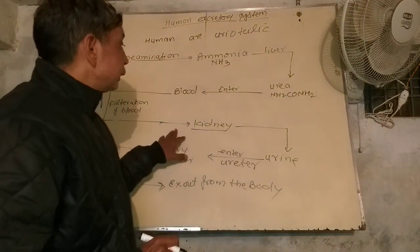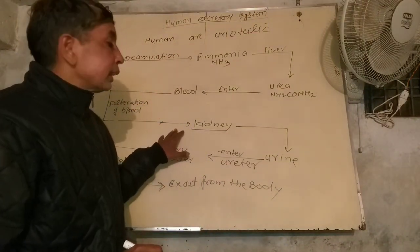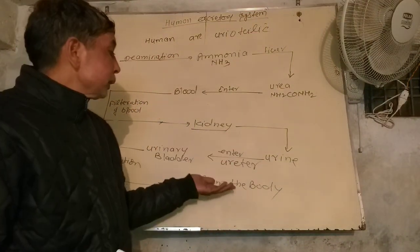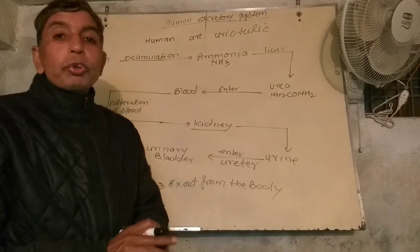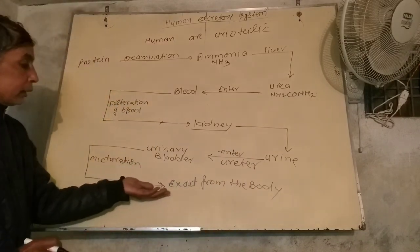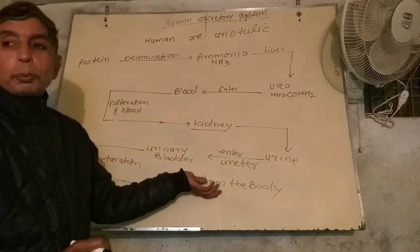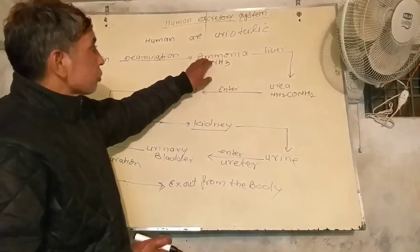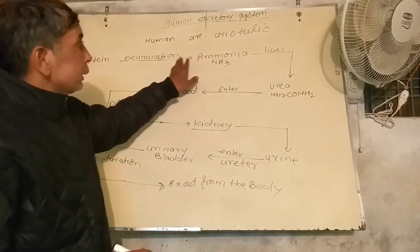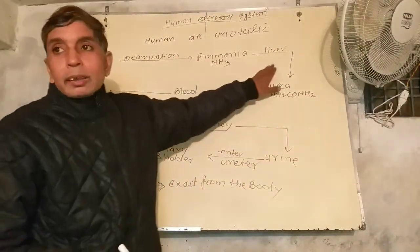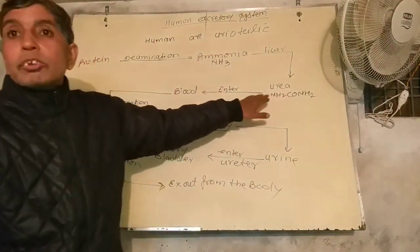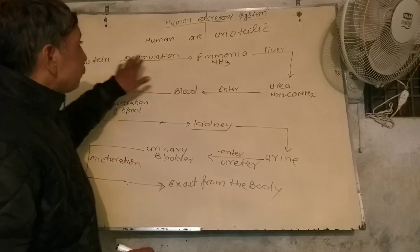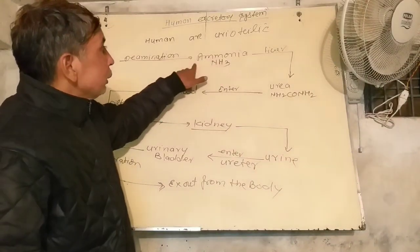When the urinary bladder fills, there is a sensitivity signal sent to the brain. By the process of micturition, urine is excreted. There is a flow chart that indicates the system — how urea is removed in the form of urine.